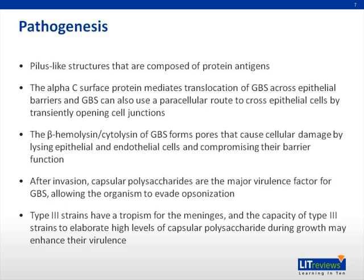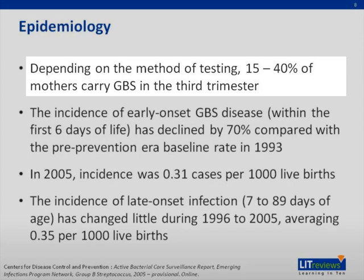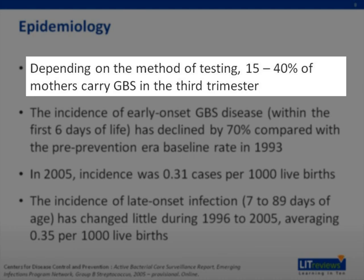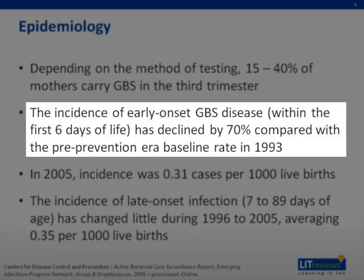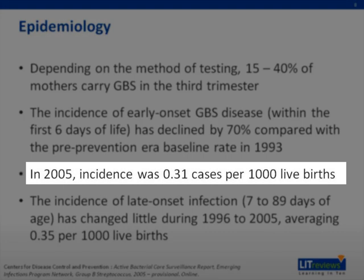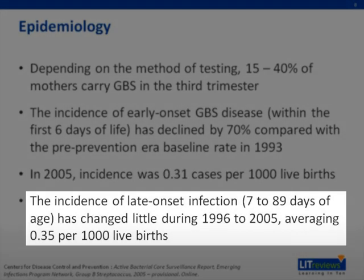As you will see later, this is an important strain in GBS infection in infants. Depending on the method of testing, 15% to 40% of mothers can carry GBS in the third trimester. The incidence of early onset GBS — that is within the first six days of life — has declined by 70% compared with the pre-prevention era baseline rate in 1993 when the ACOG guidelines were published recommending prenatal screening. In 2005, the incidence of early onset GBS was 0.31 cases per 1,000 live births. The incidence of late onset infection, that is 7 to 89 days of age, has changed little during 1996 to 2005, averaging about 0.35 per 1,000 live births.